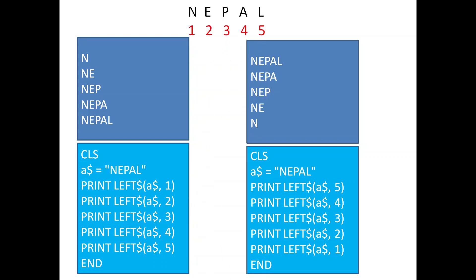Welcome to Make Easy. This is the second video on pattern printing. In the previous video I explained about left dollar, right dollar, and mid dollar and how they work. In this video I'll be explaining how to print patterns using a for loop. If you haven't watched my previous video on how for loop works, you can watch that first.